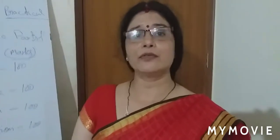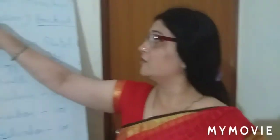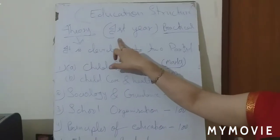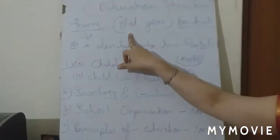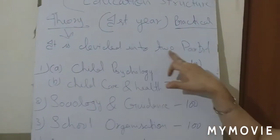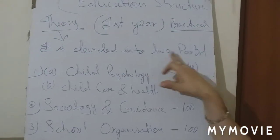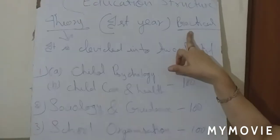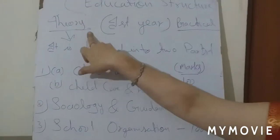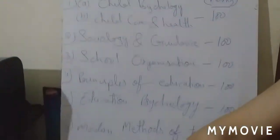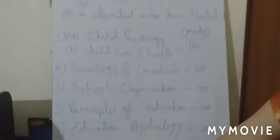Now I will tell you about the education structure of first year. It is divided into two parts: theory and practical. Theory ke ye 7 paper hain, jisme aapka written work hoga.